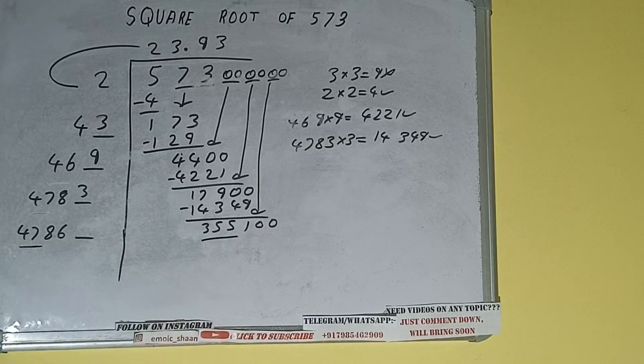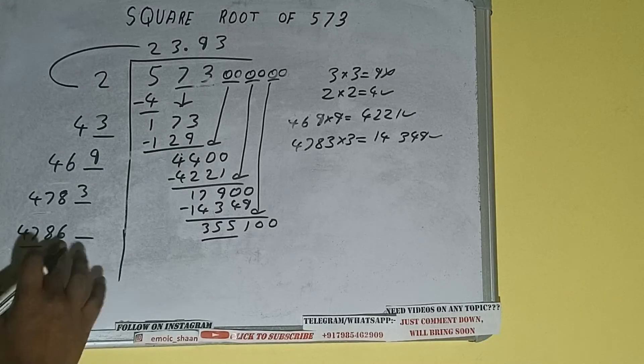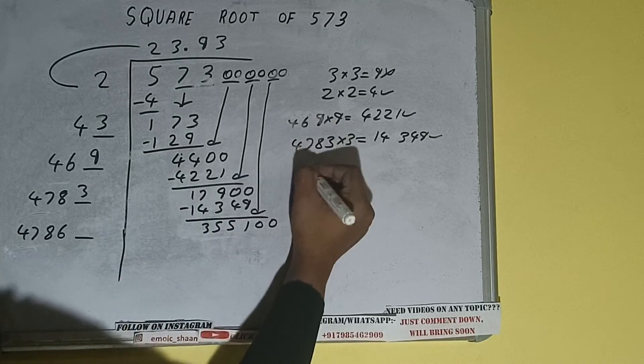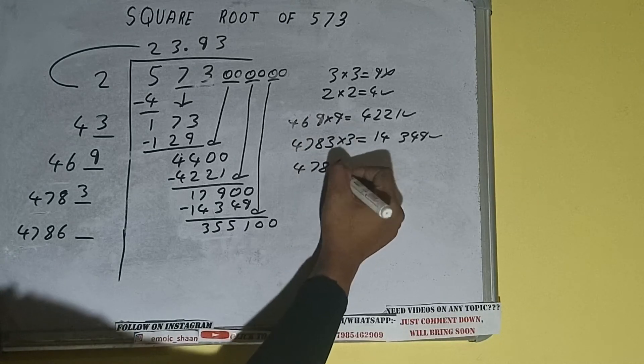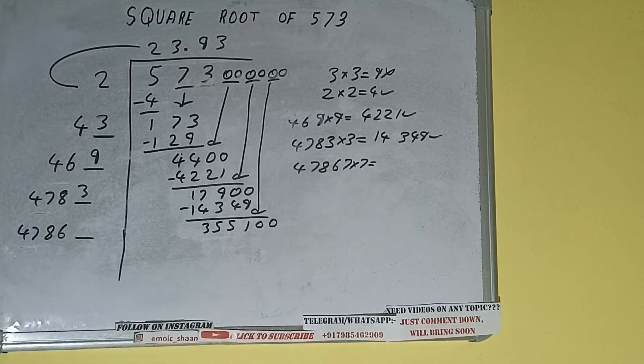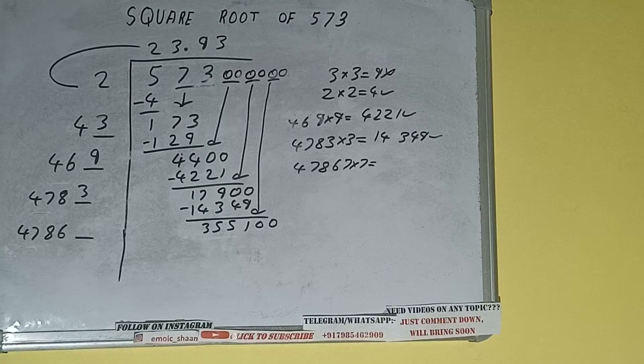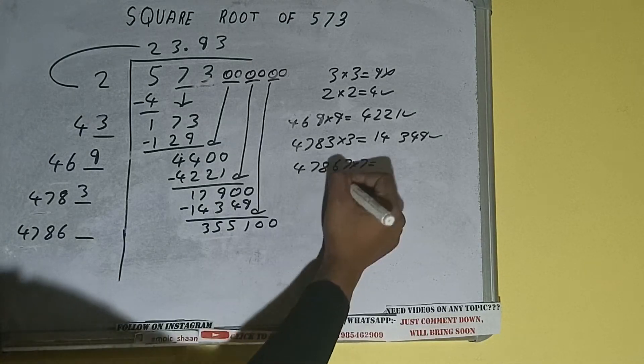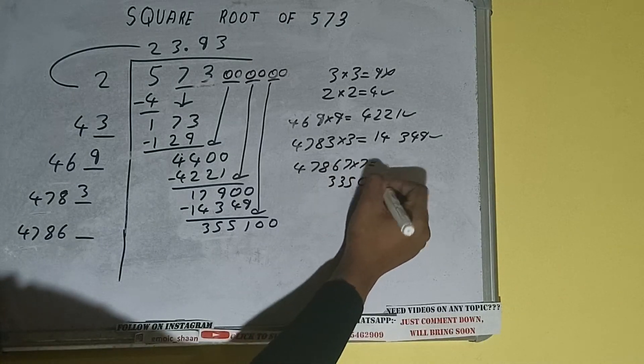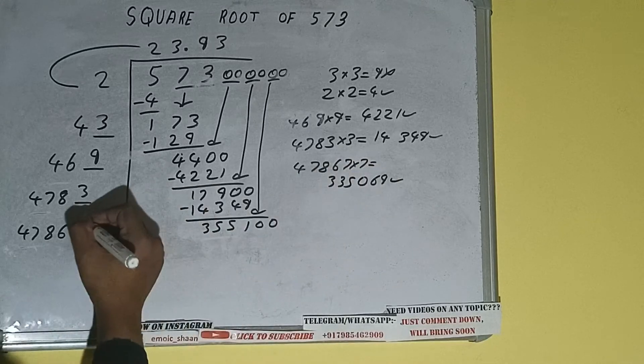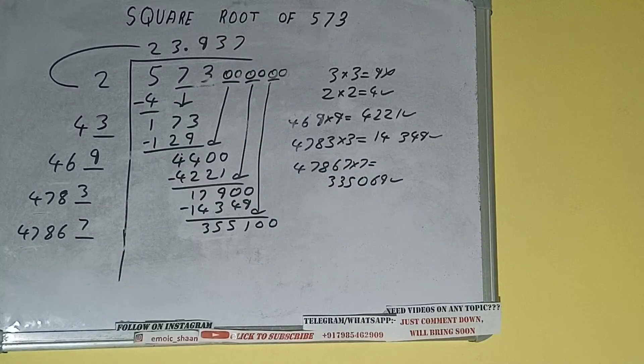Compare this 47 and 355. So 47 times 7 is 329, so we can try 7. 47867 into 7 we can try. And we'll be having 335069 which is good to take. So 7 here and 7 here.